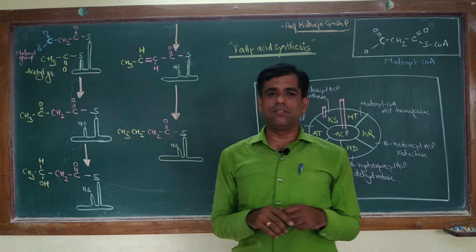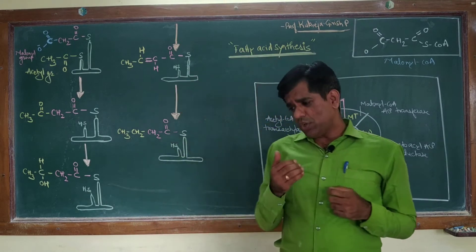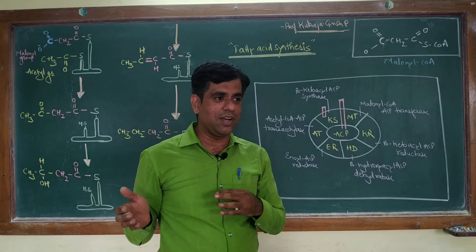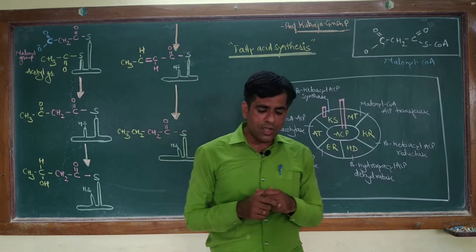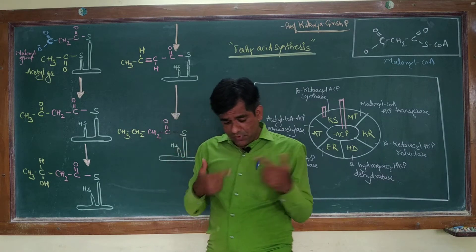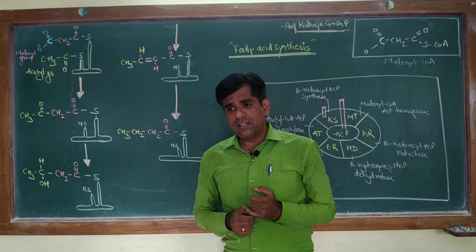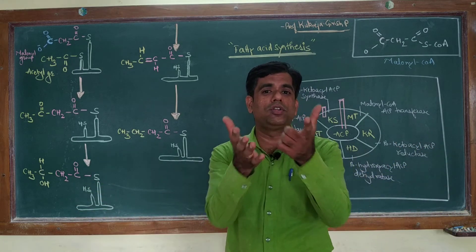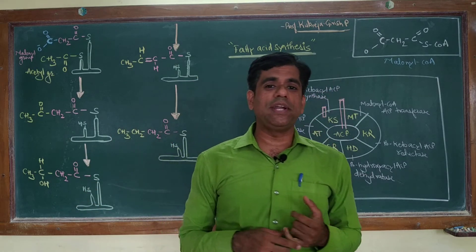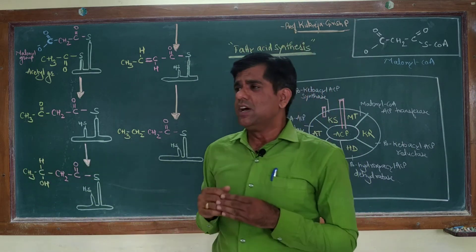Just to give a recall: during the degradation of fatty acid, especially by the process of beta oxidation, we saw that when fatty acids are being degraded by beta oxidation, the first step in the complete oxidation of fatty acids was an oxidative removal of two carbon units in the form of acetyl-CoA. When scientists were working on the synthesis of fatty acids, they thought that probably this would be the reversal of the degradation pathway.